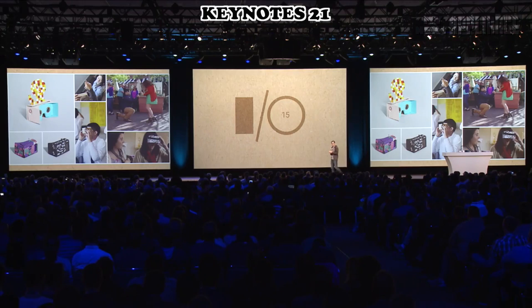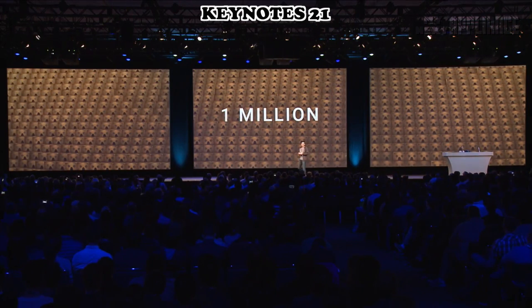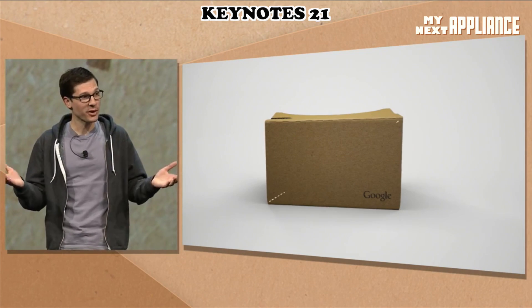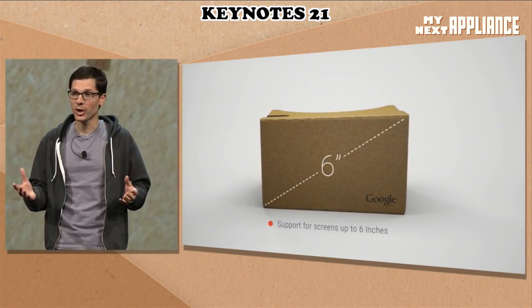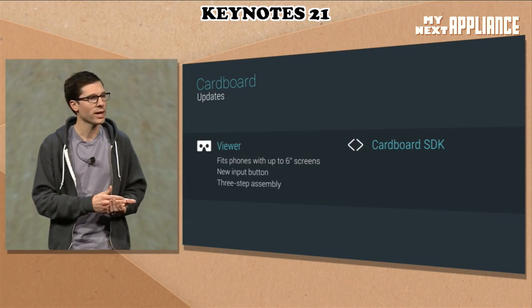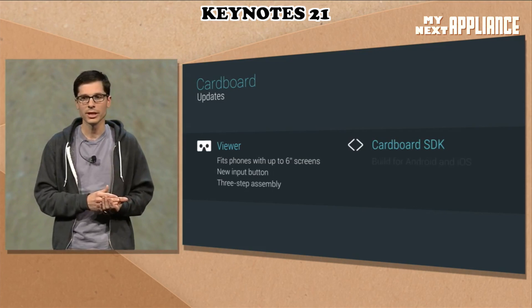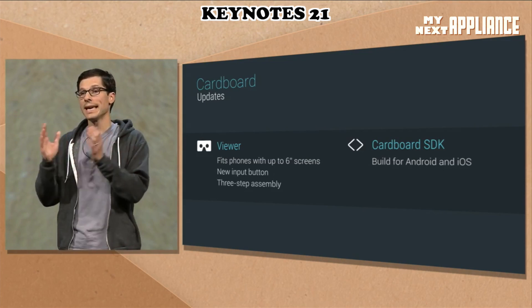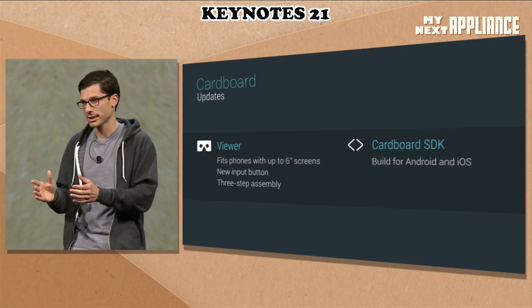I'm very excited to announce today we are launching the Android NanoDegree — a six-month course for just $200 a month, covering the entire lifecycle of Android development. There are more than one million Cardboard viewers out there in the world. The new design fits phones with screens as large as six inches. The Cardboard SDK for Unity will support both Android and iOS expeditions.